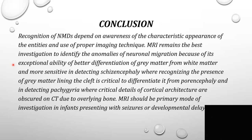In conclusion, recognition of neuronal migration disorders depends on awareness of the characteristic appearance of these entities and use of proper imaging technique. MRI remains the best investigation to identify anomalies of neuronal migration because of its exceptional ability to differentiate gray matter from white matter. MRI is more sensitive in detecting schizencephaly, where recognizing gray matter lining the cleft is critical to differentiate it from porencephaly, which is lined by white matter. For detecting areas where cortical details are obscured on CT due to overlying bone, MRI should be the primary mode of investigation in infants presenting with seizures and developmental delay.